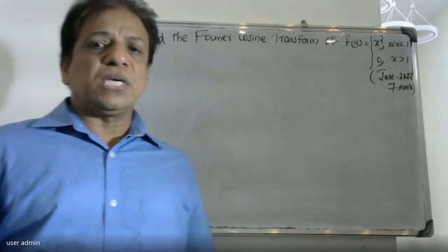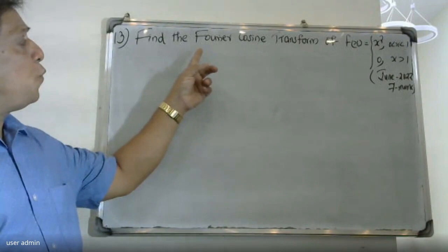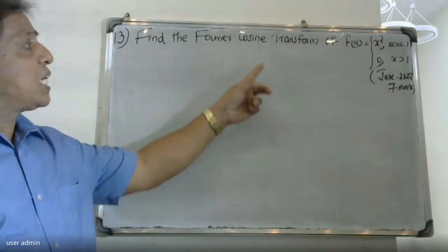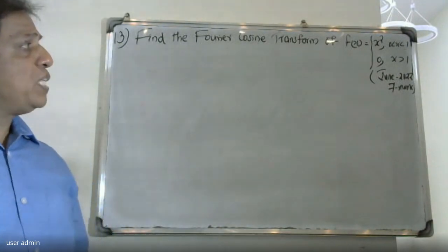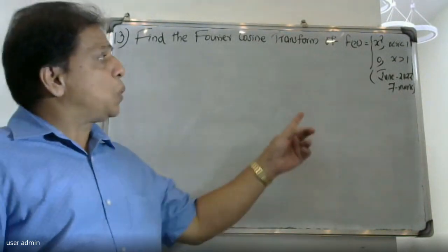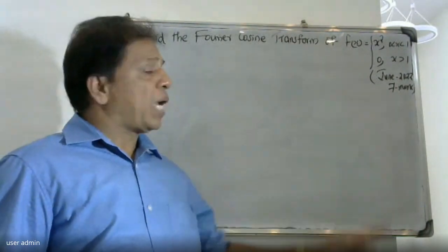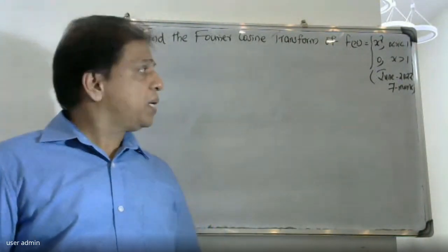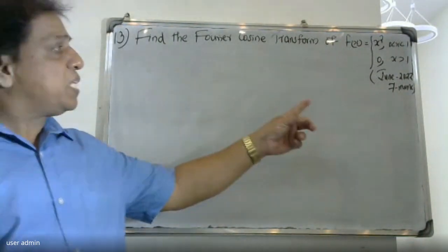Good morning students. The question is: find the Fourier cosine transform of f(x) = x² for 0 < x < 1, and 0 for x greater than 1.